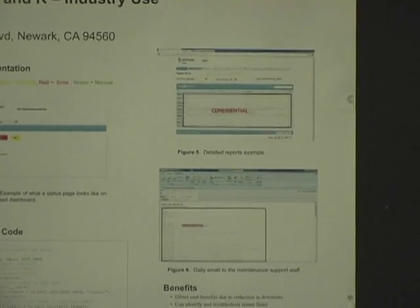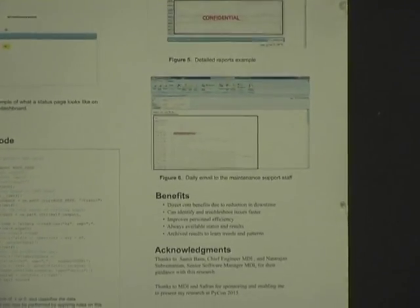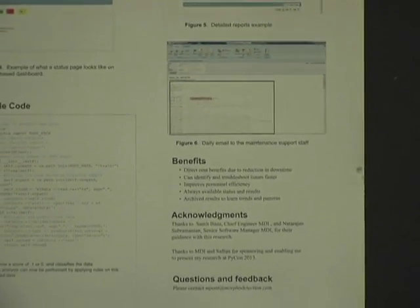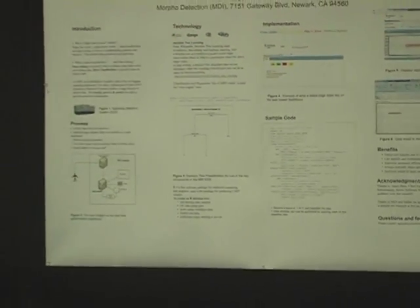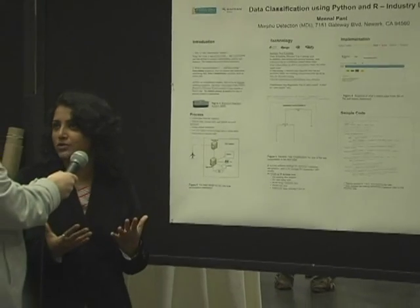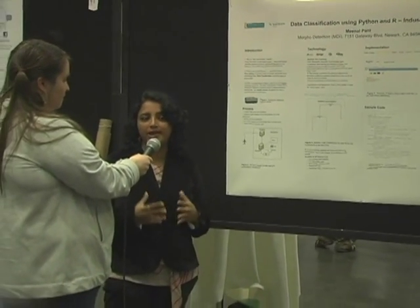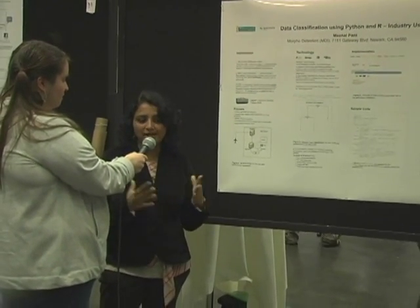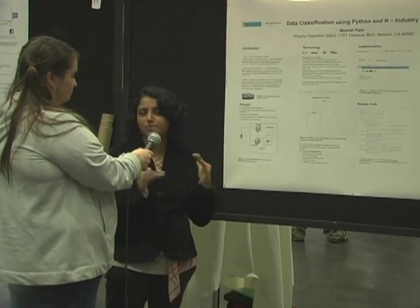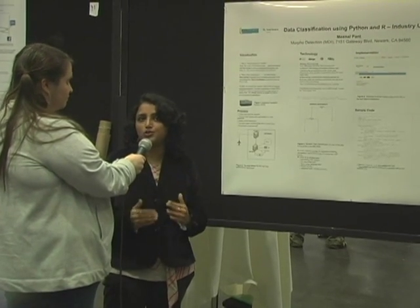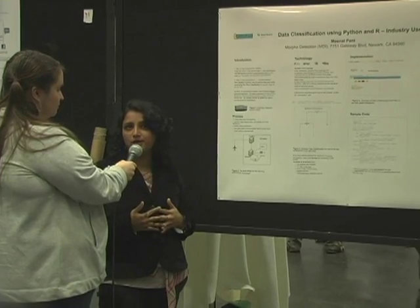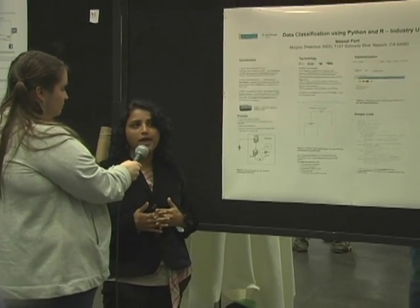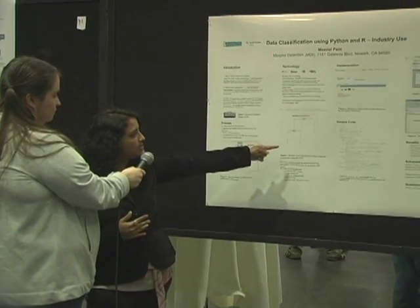With R, I chose to build a data classification tree because these days data is everything. However, my problem was not one which Facebook or Google would face. I knew the data and I knew what the answer would be, so I had to just map it into a classification — that's why I used a decision tree using R.